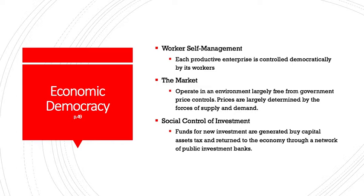Economic democracy has three features: worker self-management, the market, and social control of investment. Capitalism also had three features: the private ownership of the means of production, the market, and wage labor. Economic democracy shares one feature with capitalism — the market. Private ownership of the means of production is replaced by worker self-management, and wage labor is replaced by worker self-management, while investment is taken over by social control of investment rather than capital control.